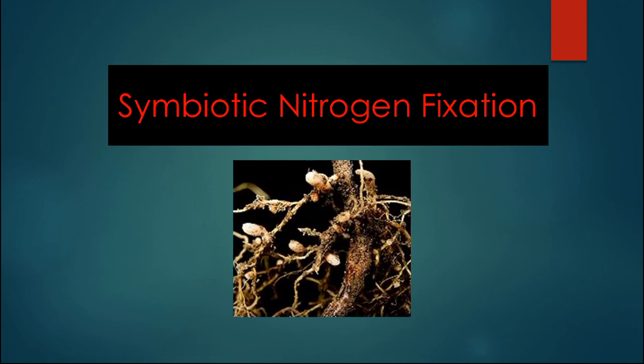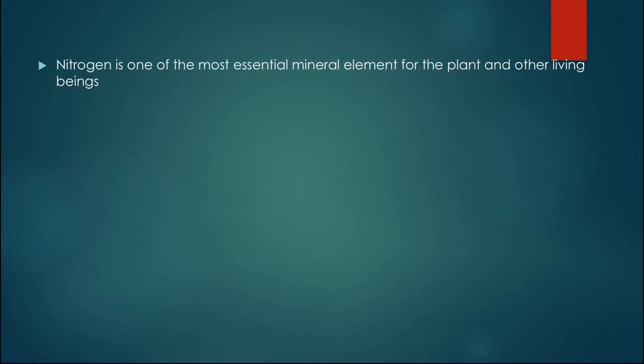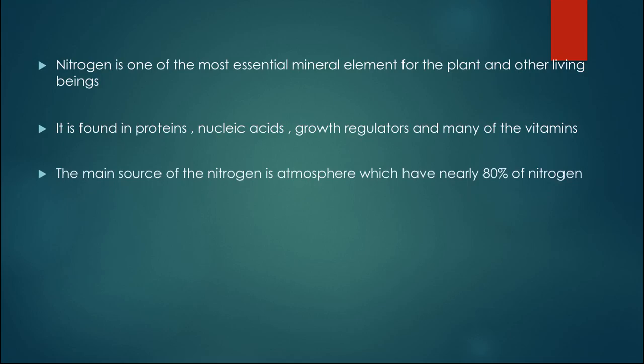It is a very important process, mainly in plants, so let's have a look at how it occurs in plants. Nitrogen is one of the most essential mineral elements for plants and other living beings. It is found in proteins, nucleic acids, growth regulators, and many vitamins. The main source of nitrogen is the atmosphere, which has nearly 80 percent nitrogen.